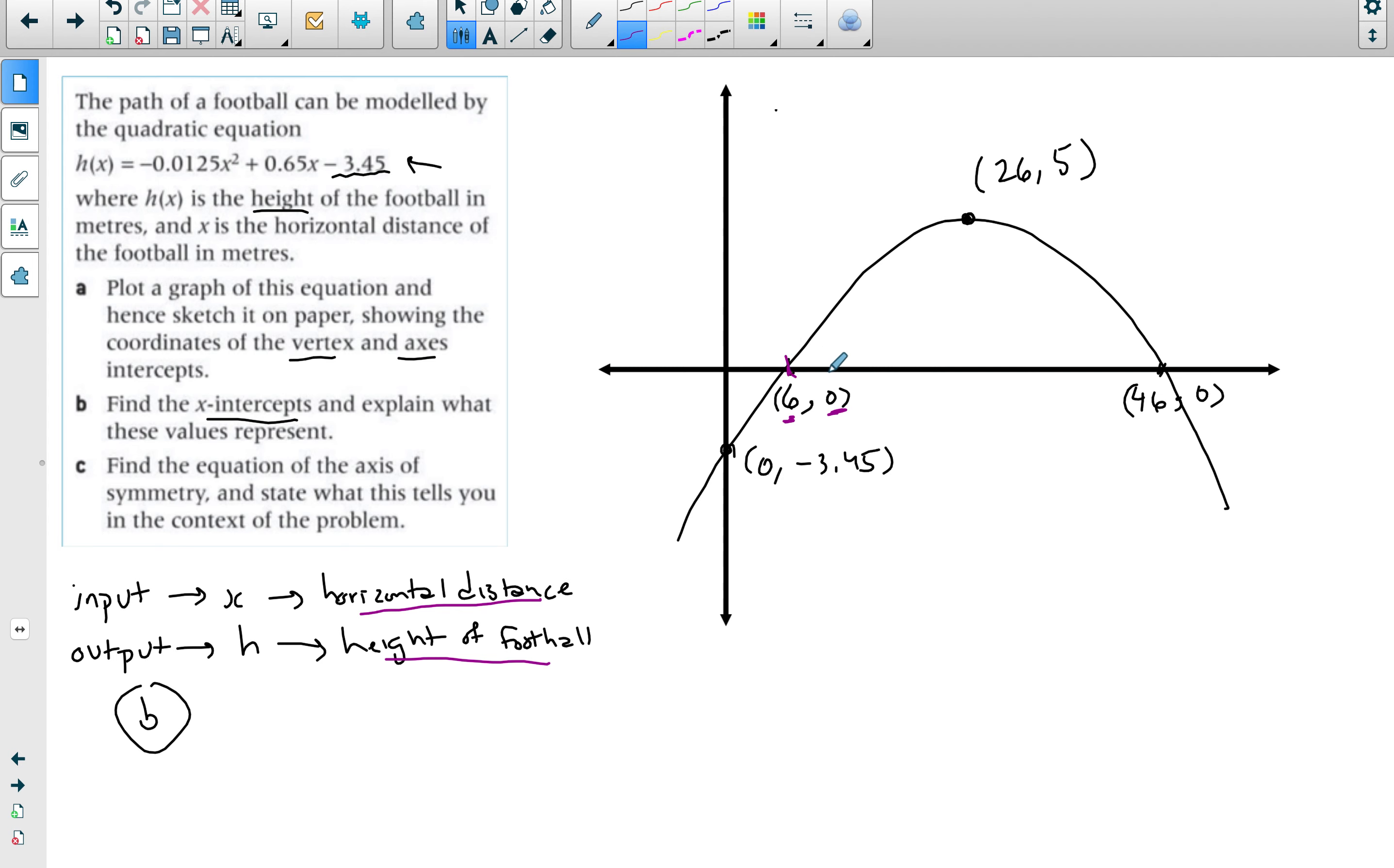You'd notice that the output from the 6 to the 46 is a positive output. It means that this is a positive height. You can't have a negative height can you? This is a negative output. So this is where the output, the y value, is positive. Between 6 and 46 the football is up in the air or it has a horizontal distance. The ball travels from 6 meters to 46 meters horizontally and that's when it gains a height.